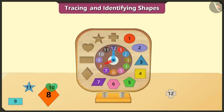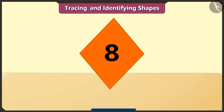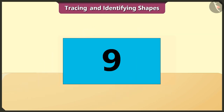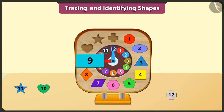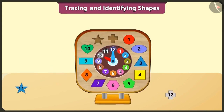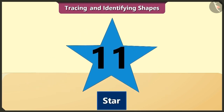The four-sided rhombus is eighth in order. And the rectangle is ninth in order — its opposite sides have the same length. The heart is tenth in order. The star is eleventh in order.